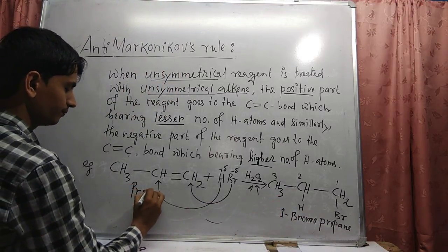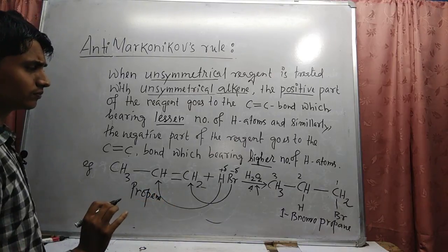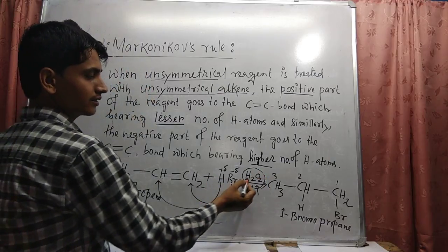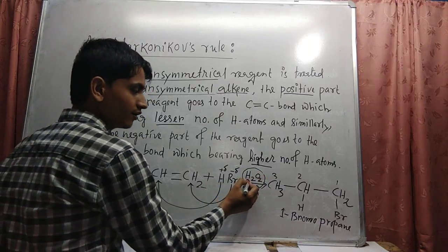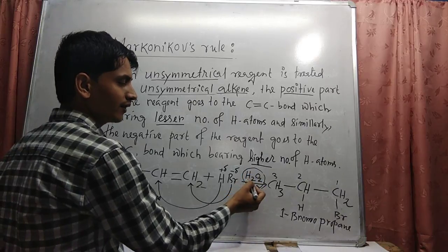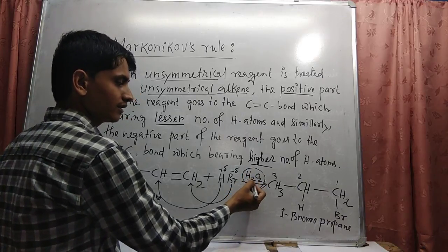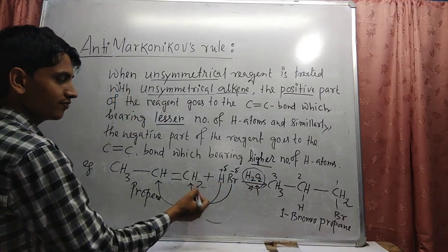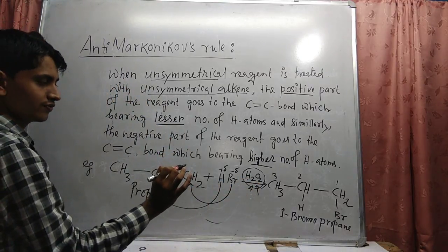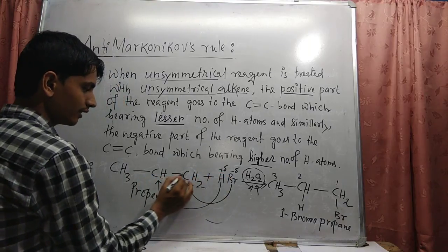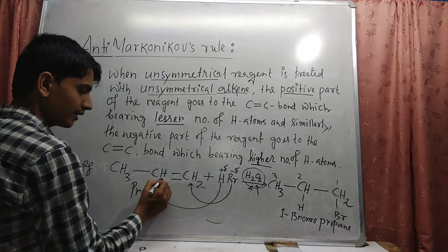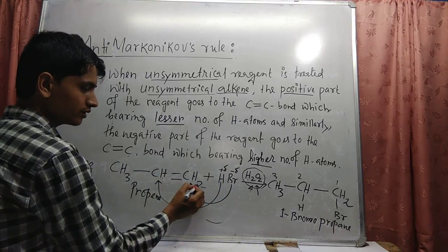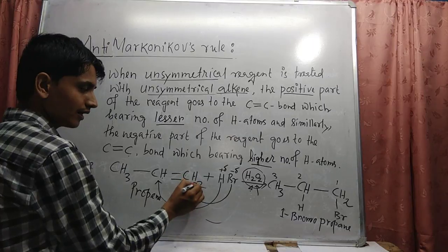This starting material is propene. Due to the presence of hydrogen peroxide, or any type of peroxide such as benzoyl peroxide, the addition is slightly different from Markovnikov's addition. The positive part of the reagent goes to the carbon-carbon double bond bearing the less number of hydrogen atoms, and the negative part goes to the carbon-carbon double bond containing the highest number of hydrogen atoms.